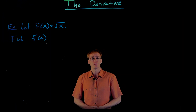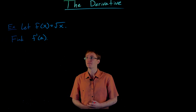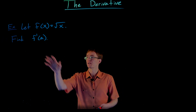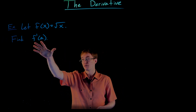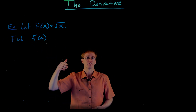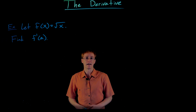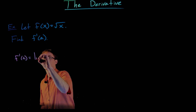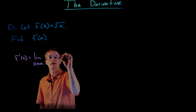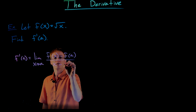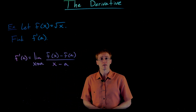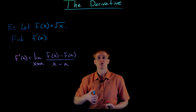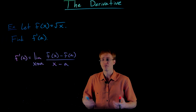We're going to do another example of finding the derivative using the limit definition, and we're going to use the limit as x approaches a definition. Here our function is the square root of x, and we want to find the general derivative at any point. Eventually we'll talk about the derivative as its own function, and thinking about the derivative at a general point is helpful — we can let our x value vary. So we won't have to go through the limit process every single time. To find f prime of a, we compute the limit as x approaches a of f of x minus f of a over x minus a.